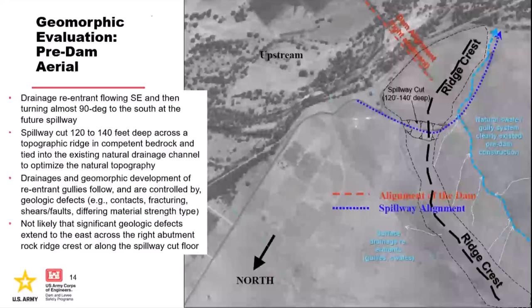That's the purpose of these geomorphic slides — we may not have really poor rock quantities in our spillway and spillway channel. Maybe they exist downstream. There's a three-dimensional aspect of this that we're trying to pull into our risk assessment.